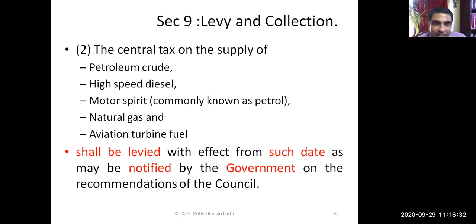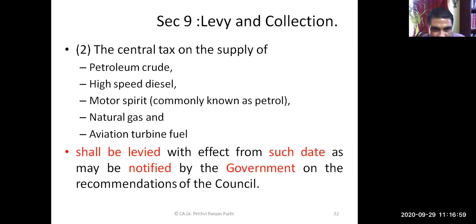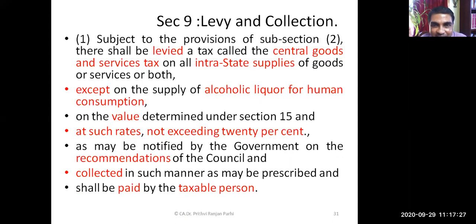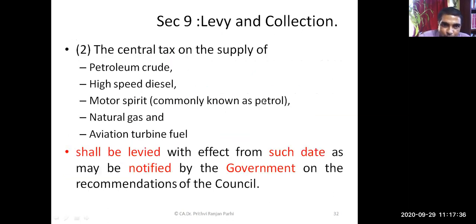Now, Section 9(2) talks about five specific items — commonly referred to as petroleum products. Subsection 1 says CGST will be levied on almost all supplies except alcoholic liquor for human consumption. Subsection 2 lists five items: petroleum crude, high-speed diesel (HSD), motor spirit (petrol), natural gas, and aviation turbine fuel (ATF). Central tax on the supply of these items shall be levied with effect from such date as may be notified by the government on the recommendation of the council.